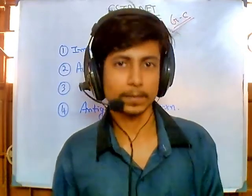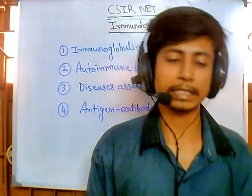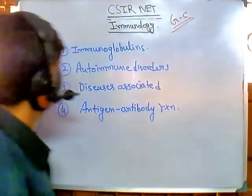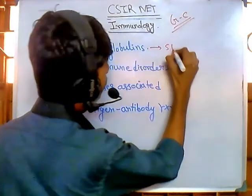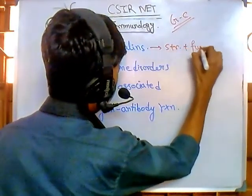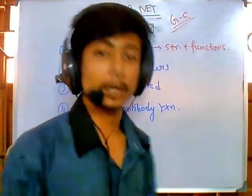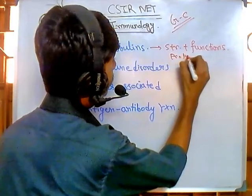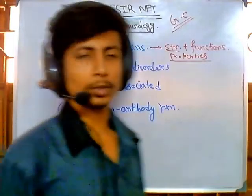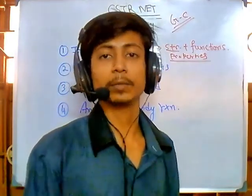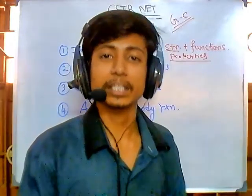You can't cover all of it, but if it's in your syllabus you've probably read it once or twice. You need to know majorly four or five things. First, immunoglobulins — majorly the structure and functions of immunoglobulins. If you don't understand the structure very well, that's fine, but properties are very, very important. For example, IgM is a pentamer and IgA is the secretory one — these specific properties you need to learn.